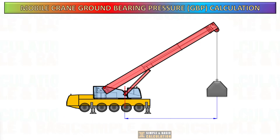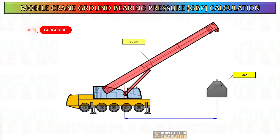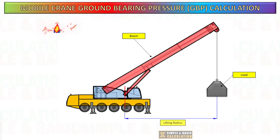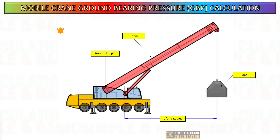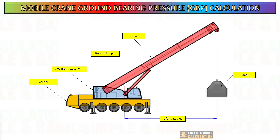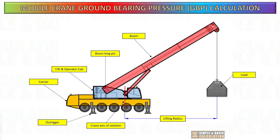The main components we must know for our computation are: the weight of the cargo to be lifted and the lifting radius, massive mobile crane components and their distance to the center of rotation or swing point. The parameters to consider are the weight of the boom, the distance between the boom's kingpin and the center of rotation, the upper structure with its counterweight, and the distance between the carrier's center of gravity and the center of rotation.